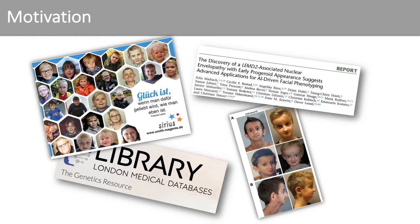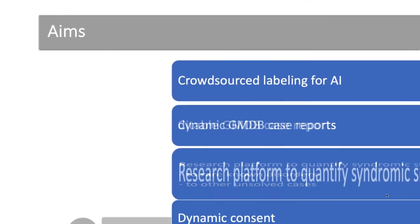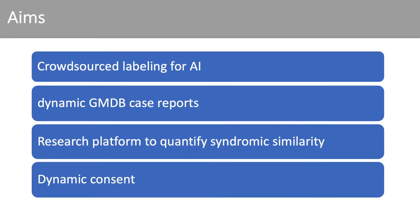Thousands of images have been published in recent years in the literature, but these data are not machine-readable and are distributed over many sources — for example, in case reports, reviews, patient support groups, or other databases. The London Medical Database that Face2Gene users use for training is not accessible to the scientific community. Thus, one of our aims is to achieve a large and diverse dataset by crowdsourced labeling that can also be used for the training and testing of AIs.